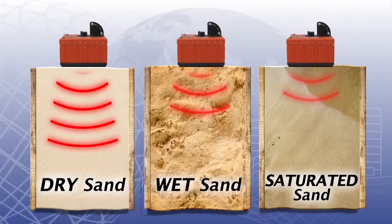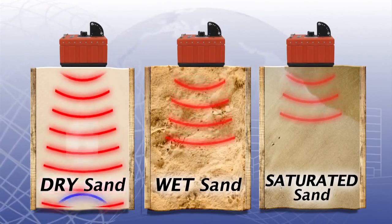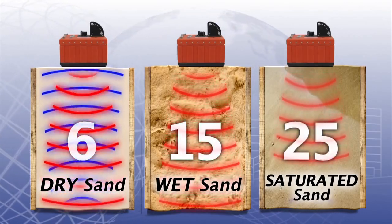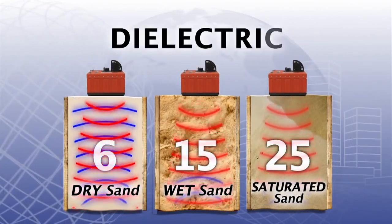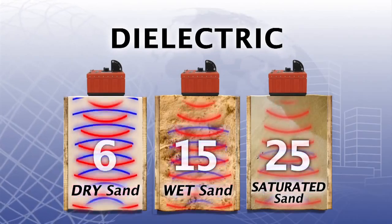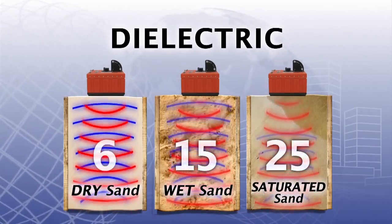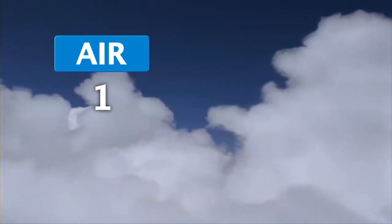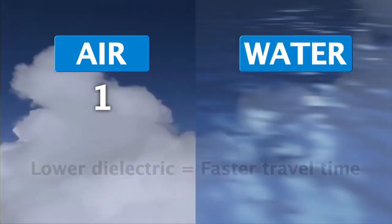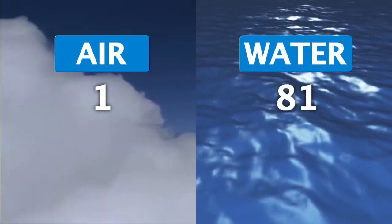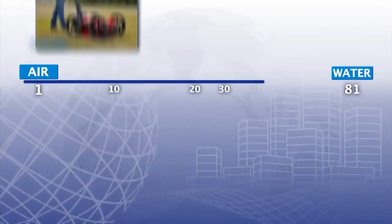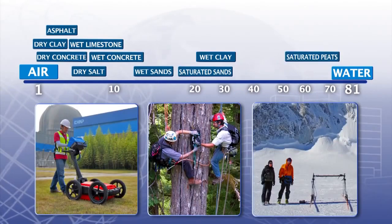Radar travels at different speeds through different mediums. A value is assigned to these mediums to represent different velocities of radar. This value is called dielectric. Dielectric is important so the depth of targets or layers can be accurately estimated. Air has a dielectric of 1, which means radar travels fastest through air. Water has a dielectric of 81, which means radar travels slowest in water. Every medium in the world falls somewhere in between.